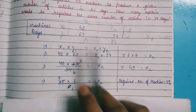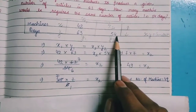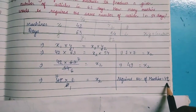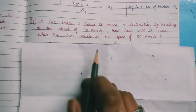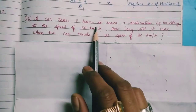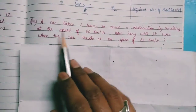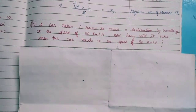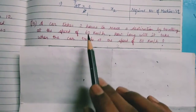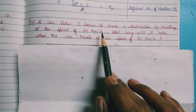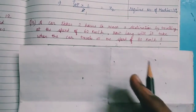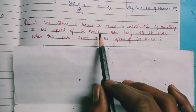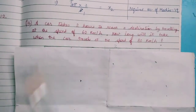So x₂ = 49. The number of machines required to complete the work in 54 days is 49. Question number 9: A car takes 2 hours to reach a destination by travelling at the speed of 60 km/h. One destination is there; if the car is travelling at 60 km/h continuously, the journey is completed in 2 hours.